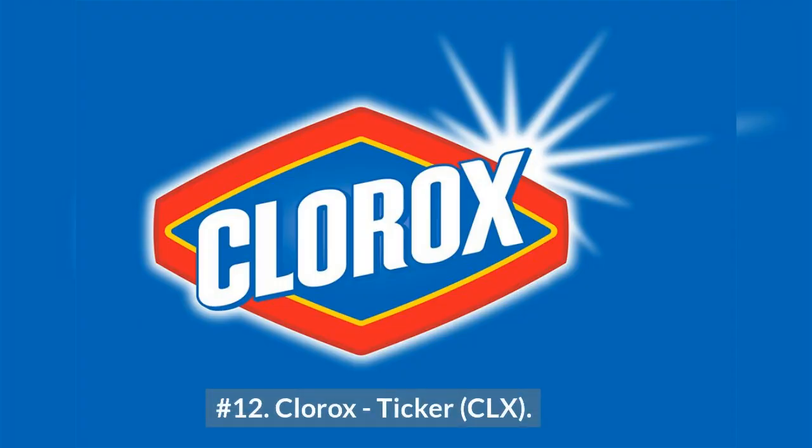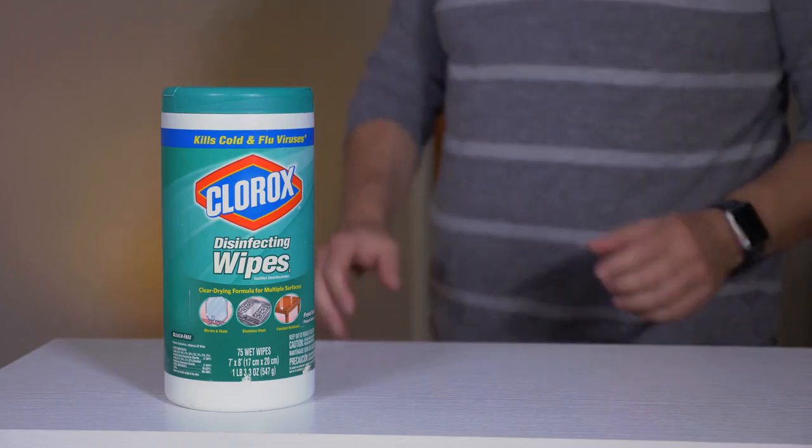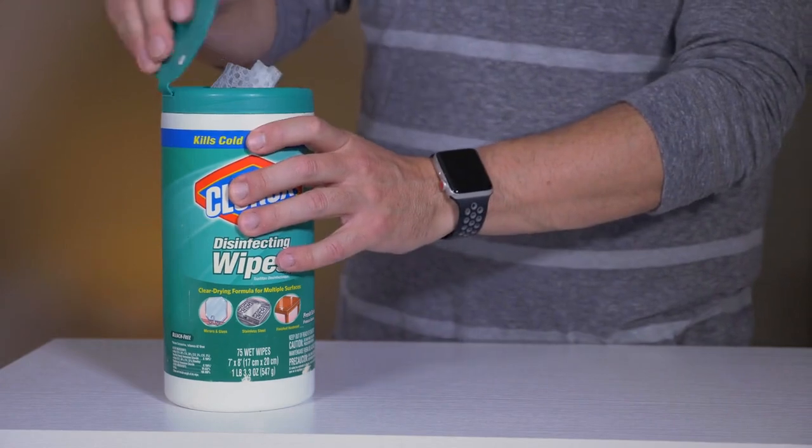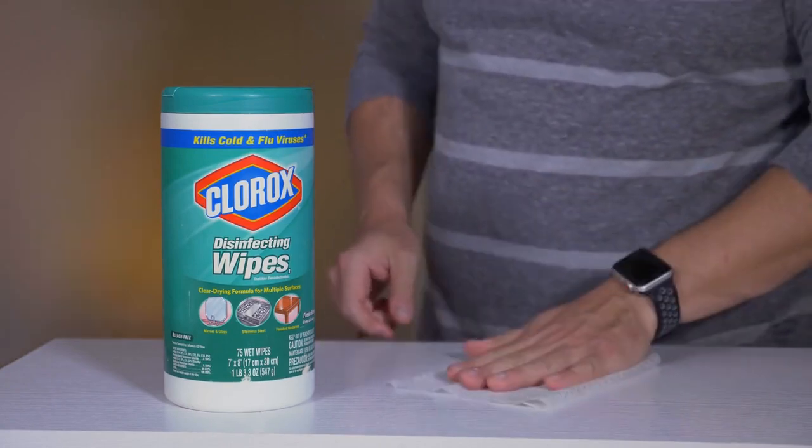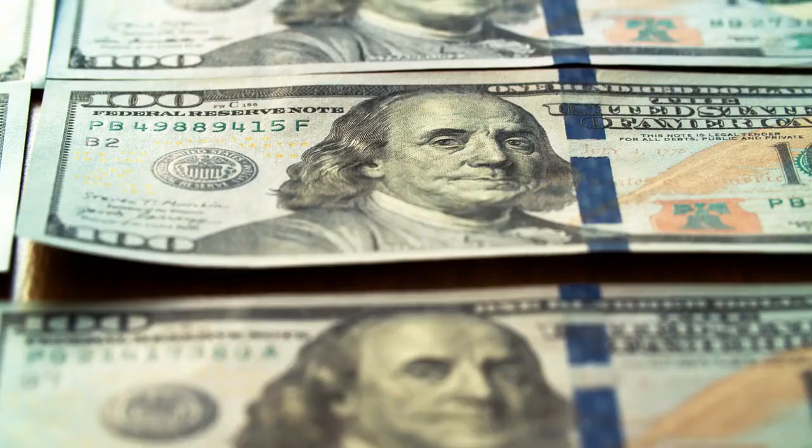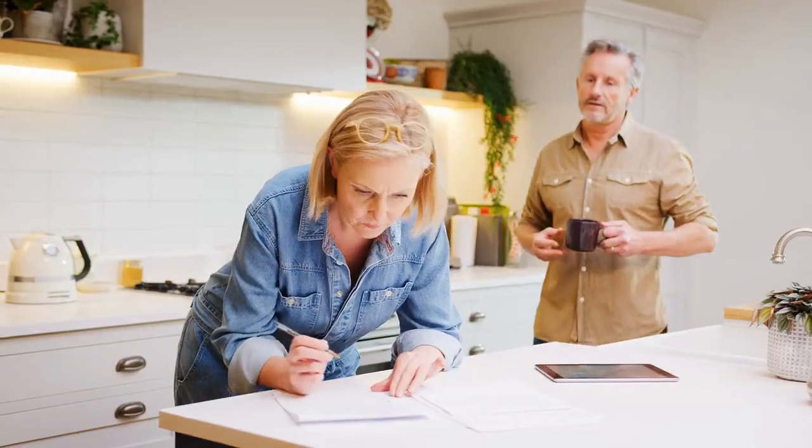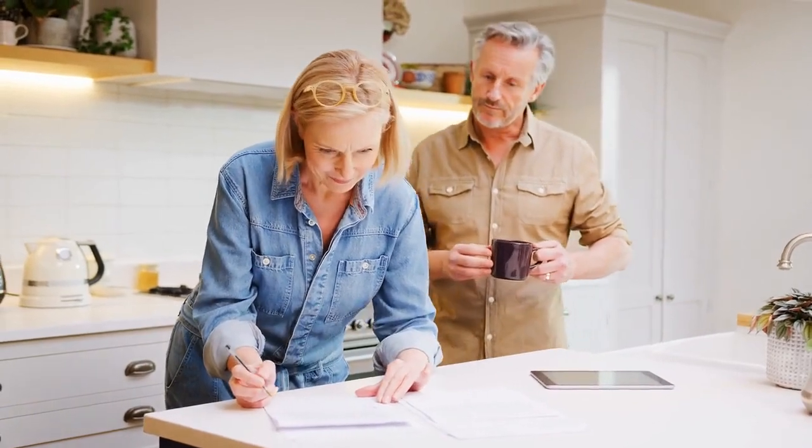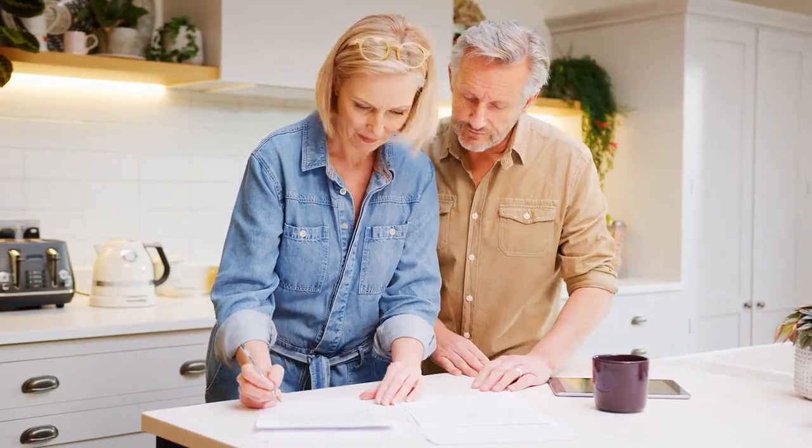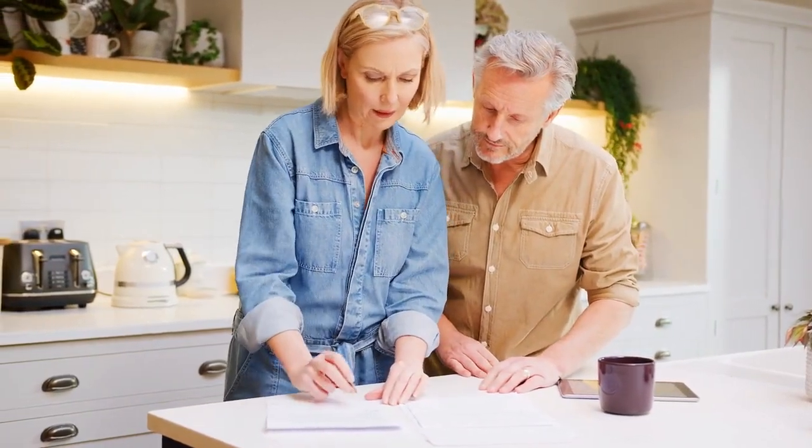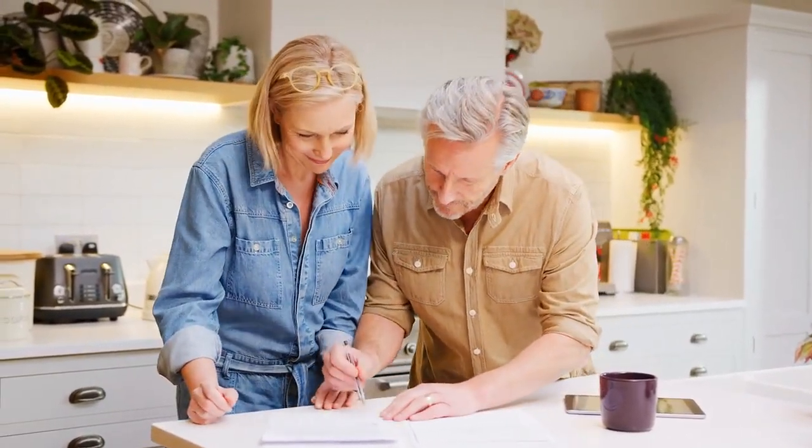Number 12, Clorox, ticker CLX. Clorox is the maker of the iconic bleach brand that goes by the same name, but what you may not know is this company has tremendous strength across a variety of household goods categories, holding the number one or two position in many of the areas it competes. More importantly, for dividend investors is the company's awesome dividend history and track record. The consumer staples giant is currently offering investors a generous yield of 3.2% as of January 2023. That's toward the high end of the company's historical dividend yield range. The company has increased its dividend annually for over 45 consecutive years, making it a dividend aristocrat.